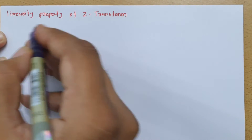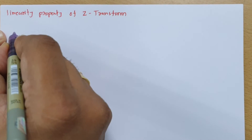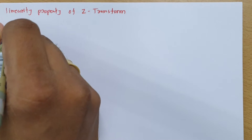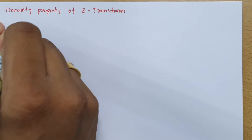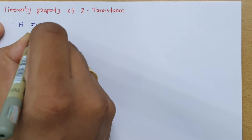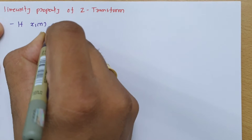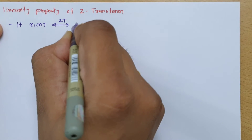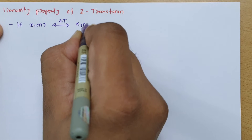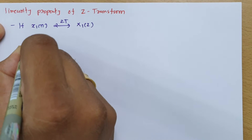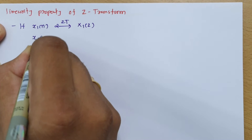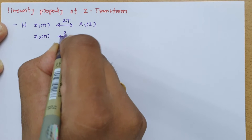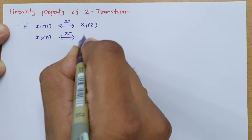To explain the linearity property of the Z-transform, we need to have two signals. If we have signal 1, that is x1(n), and its Z-transform is X1(z), and if we have a second signal x2(n) and its Z-transform is X2(z).